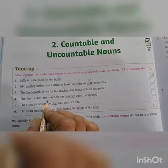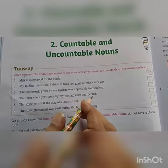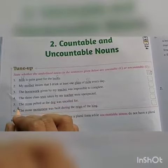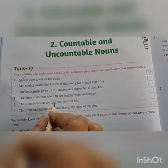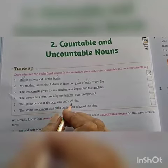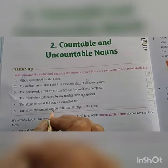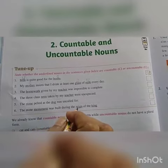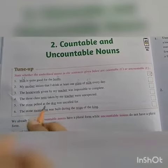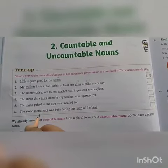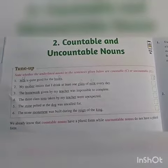Number four: 'The three class tests taken by my teacher were unexpected.' Number five: 'The stone felted at the dog was uncalled for.' Number six: 'The stone monument was built during the reign of the king.' Please note these in your notebook. Thank you.